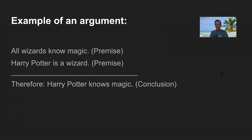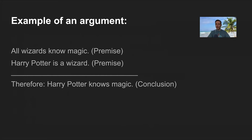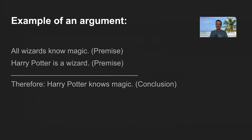Here's a simple example of an argument. Every argument has at least one premise and a conclusion; some have two, three, or four premises. But every argument has one and only one conclusion. Consider: 'All wizards know magic' — that's a premise. 'Harry Potter is a wizard' — that's a premise. Therefore, 'Harry Potter knows magic' — that conclusion follows by necessity from those reasons. There are lots of different kinds of arguments, but they all have premises and one conclusion.